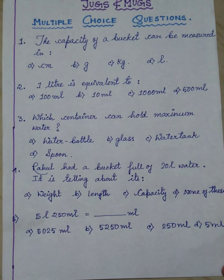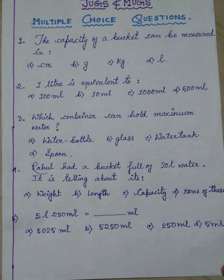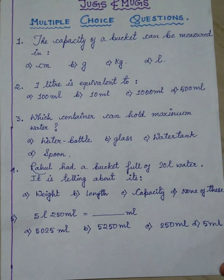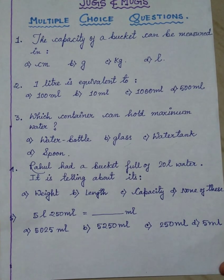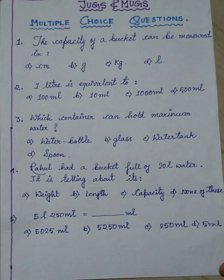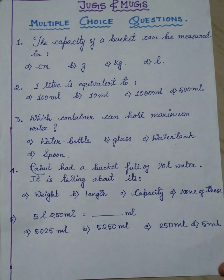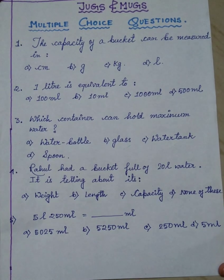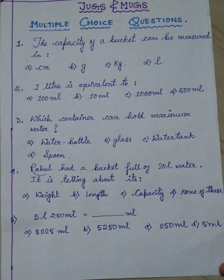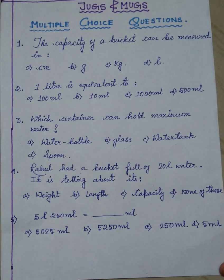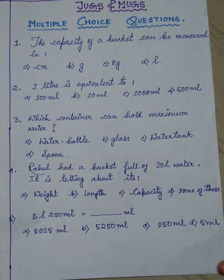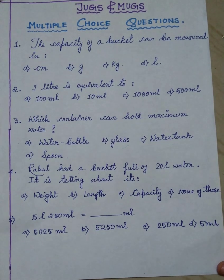Next, four number is, Rahul had a bucket full of 20 litre water. What is it telling about? Weight, length, capacity, none of this. So 20 litre of water a bucket contains, so this represents what? You have to take the correct answer.